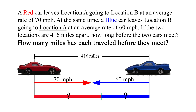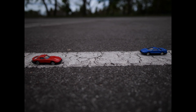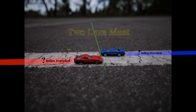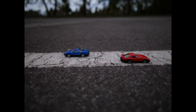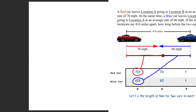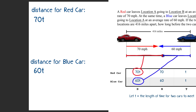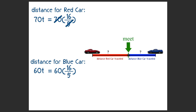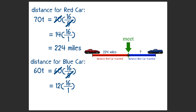For the last question — how many miles has each traveled before they meet? By substituting the answer we got from the first question, using the improper fraction form and cross-canceling: 5 can go into 70 fourteen times and into itself one time. Multiply straight across, we get 224 miles for the red car. Cross-canceling again: 5 can go into 60 twelve times and into itself one time. Multiply straight across, we get 192 miles for the blue car.